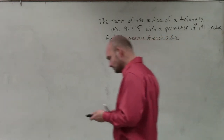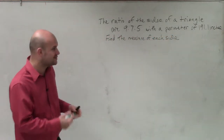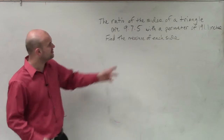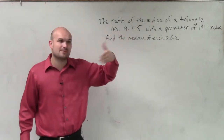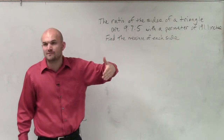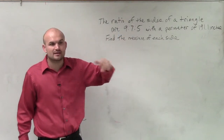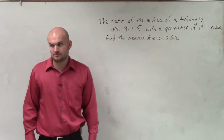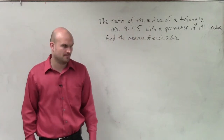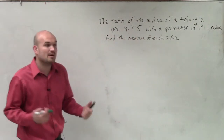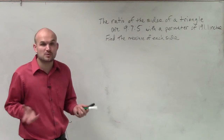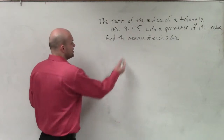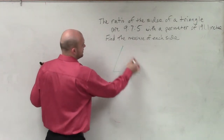Now, we kind of have an issue with this. Remember, perimeter is the sum of all the lengths. So does 9 plus 7 plus 5 give you 191? No. Remember, when we write ratios, we like to write them in simplified form. So let me give you an example of a triangle.